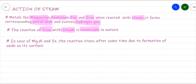We need to remove hydrogen as soon as it is formed to prevent the reversible reaction. For metals like magnesium, aluminium, and zinc, after some time the reaction slows down or stops. This is because the oxide layer formed covers the metal surface, preventing it from coming into contact with steam. So the reaction eventually comes to an end because of the formation of this oxide layer.